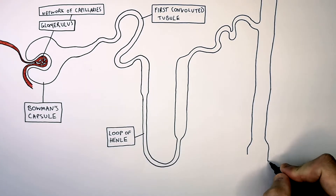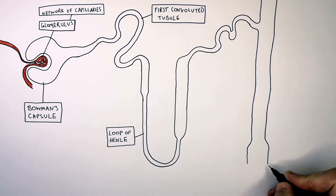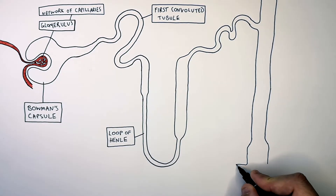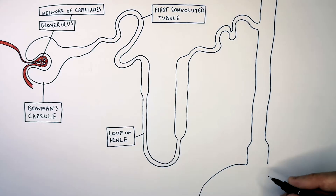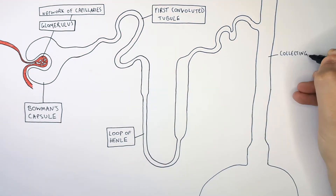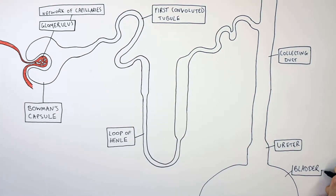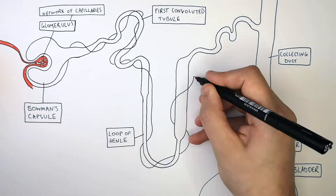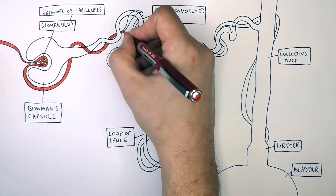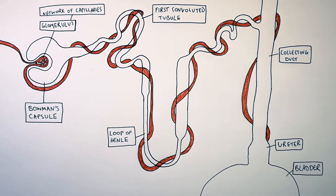This is the ureter, so the collecting duct passes into the ureter, which then connects to the bladder. So the collecting duct connects to the bladder via the ureter. Surrounding the nephron is a series of capillaries that allow molecules to be reabsorbed from the nephron back into the blood.